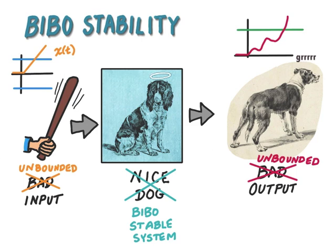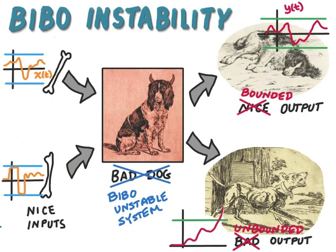Just like hitting a nice dog is not a good way of telling if it's a nice dog. So the use of nice inputs — bounded inputs — to a BIBO unstable system to see how it behaves is an ideal kind of input to use, because we know that a nice system will not respond in a bad way to a nice input. It's only the bad system that responds in a bad way to a nice input.